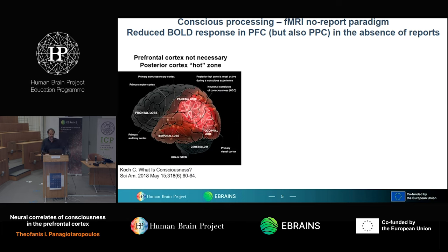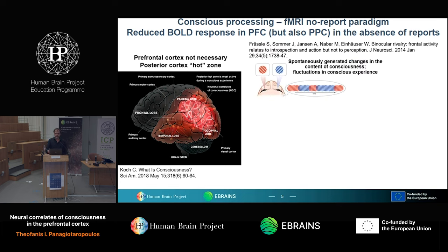This has led to other approaches. Integrated Information Theory suggests that what mediates conscious perception is not prefrontal cortex but the posterior cortex — a posterior cortical hot zone including parietal and occipital lobe. One piece of evidence used to support this idea involves binocular rivalry, a paradigm of multi-stable perception where two different stimuli are presented to each eye. Although stimulation remains constant, there are spontaneous fluctuations in conscious experience — one stimulus is consciously perceived for a given time, then perception switches to the other.